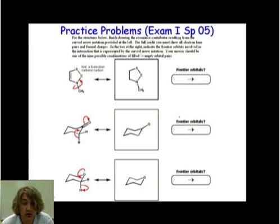For this problem, we're going to finish drawing the resonance contributor resulting from the curved arrows shown there on the left. Show all the lone pairs, all the formal charges, and then also indicate which frontier orbitals were involved in that interaction. It'll be one of the nine types that we've discussed so far.